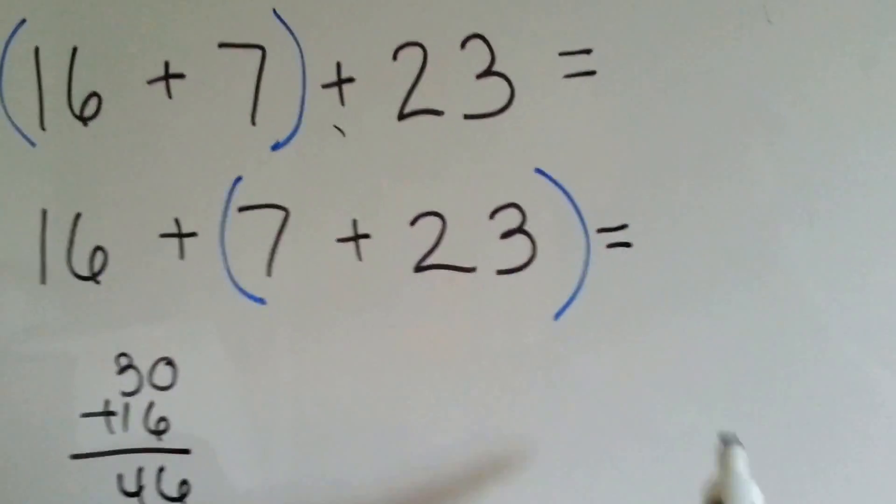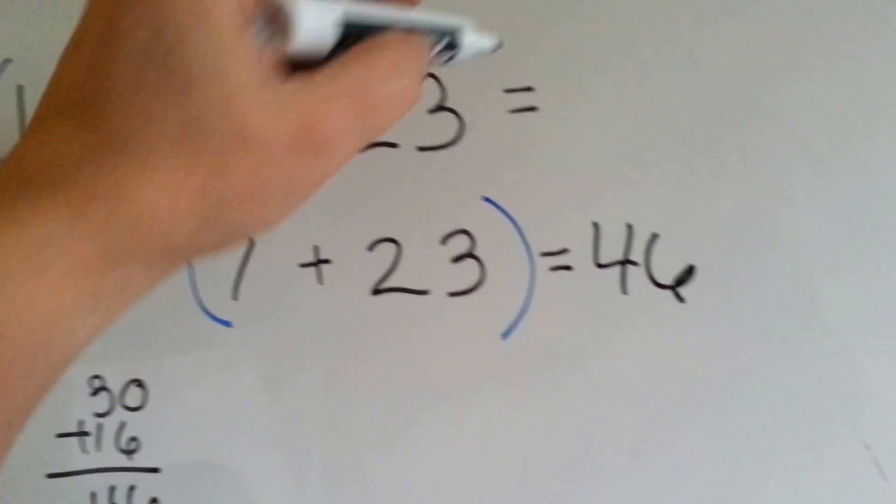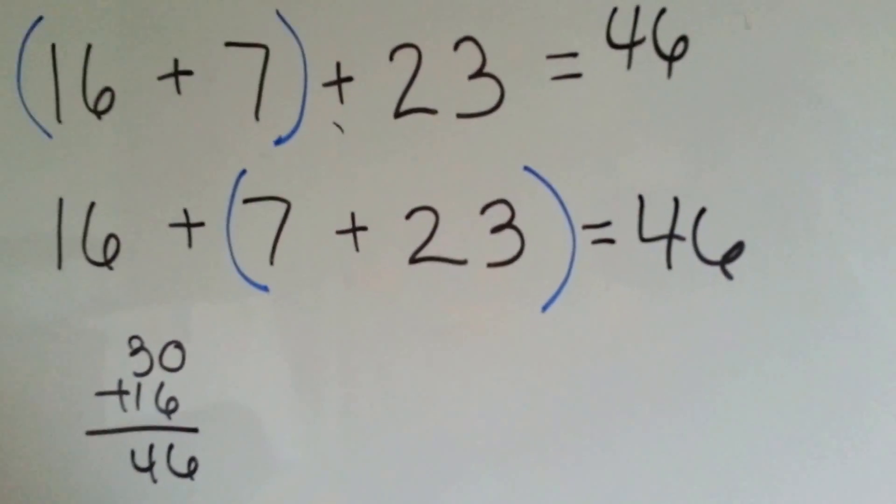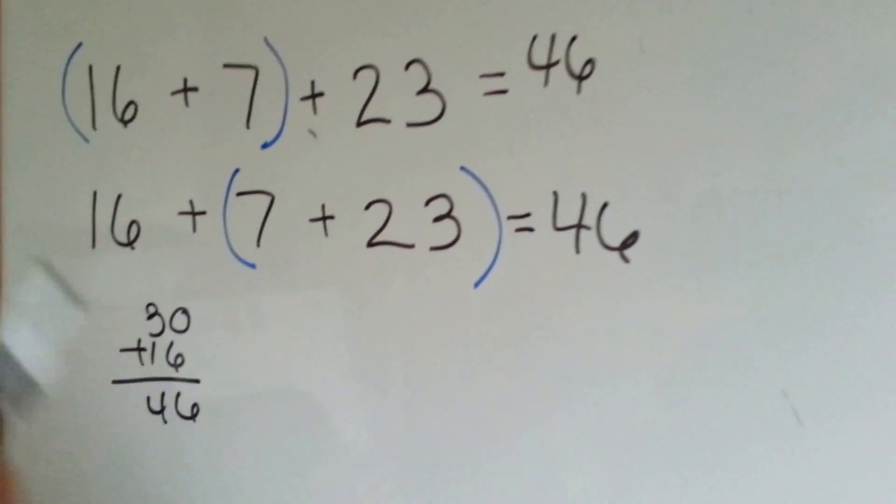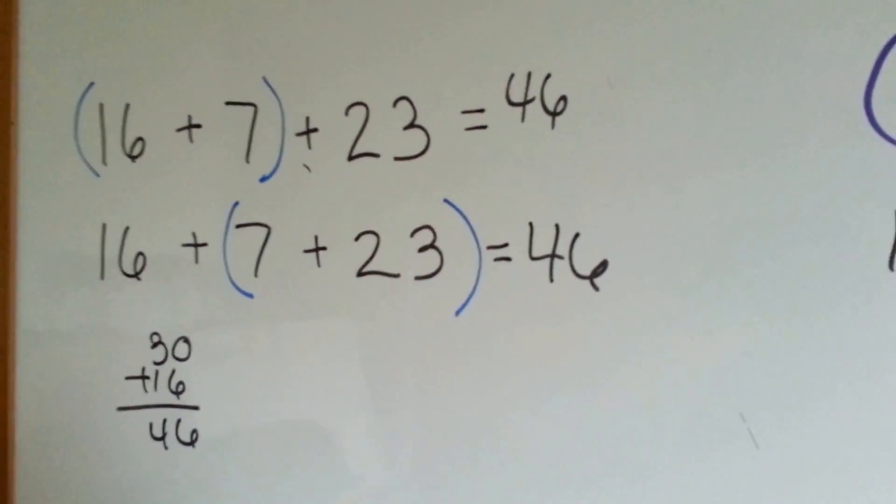So this is the easier way. But we know that the top one would also equal 46. It's just the bottom one would be easier to add, wouldn't it? That's the associative property. It doesn't matter which numbers you group together. They're still going to equal the same thing.